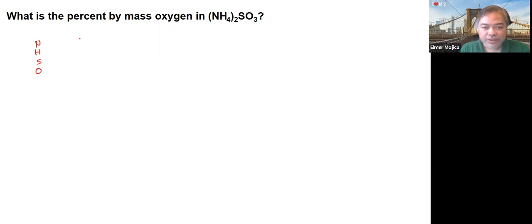So you have here two nitrogen times 14, four times two, so that's eight times one. Sulfur is one times 32, and you have here three oxygen times 16.